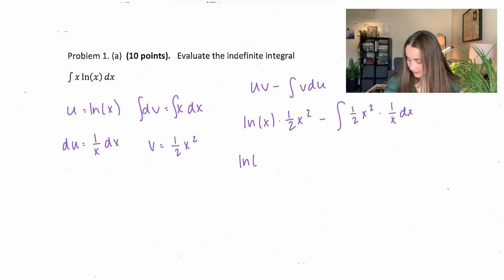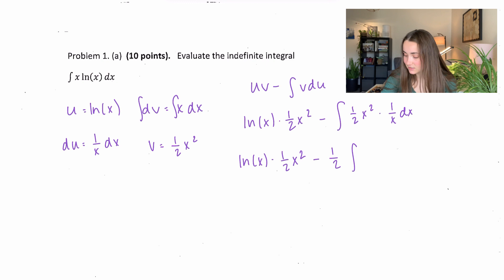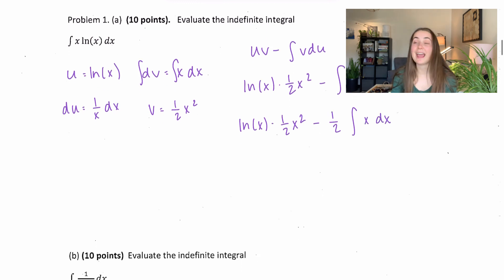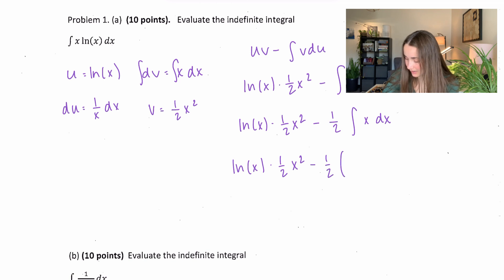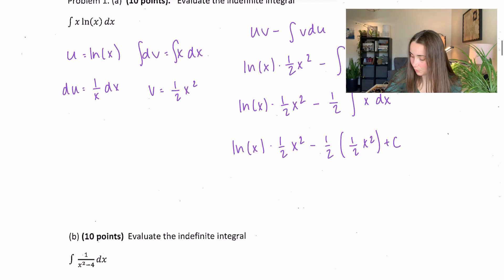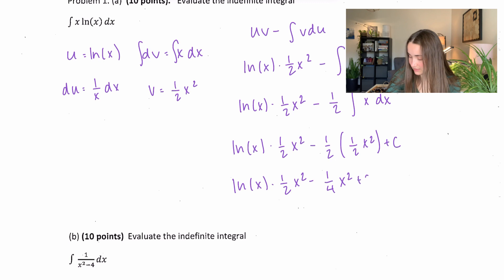We can rewrite that as ln(x) times ½x² minus — bringing out the scalar ½ — x² times 1/x is just x. So we can integrate x. That term just remains. We get minus ½ times the integral of x, which gives ½x², so minus ¼x² plus constant c. And that right there is our solution.